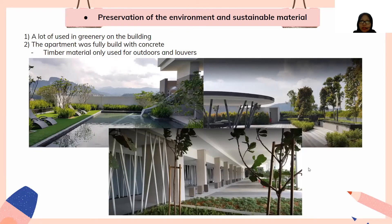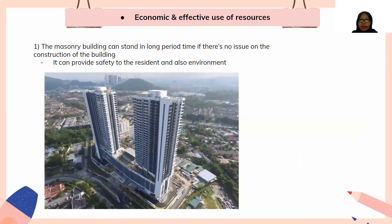For preservation of the environment and sustainable materials: the apartment uses greenery on the building — around the swimming pool, store area, and lobby there are many green plants. However, the apartment is fully built with concrete. Timber is only used for outdoor elements and louvers. While concrete makes the high-rise building more sturdy, it releases large amounts of carbon into the air, contributing to air pollution.